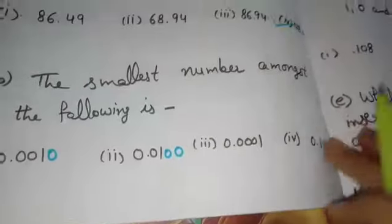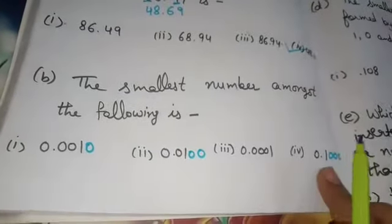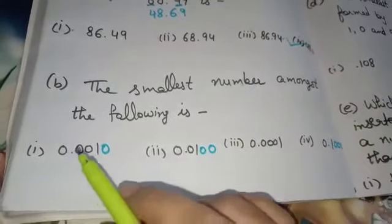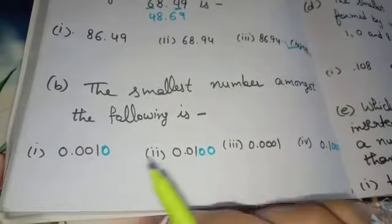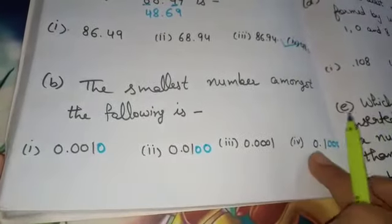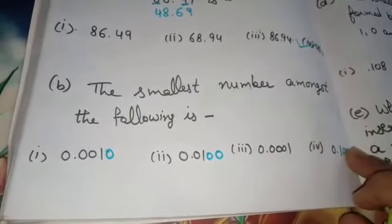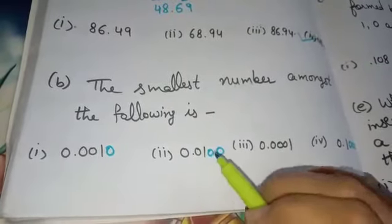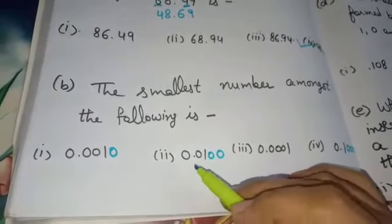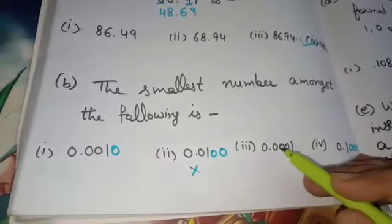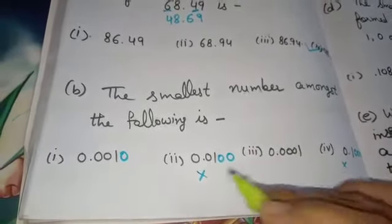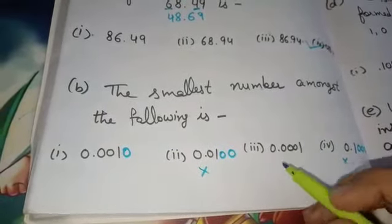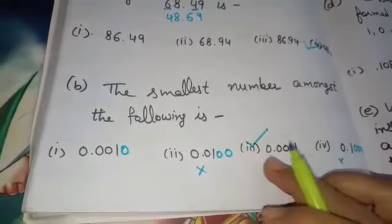Part B: we have to find the smallest number among the following. To compare, first make them like decimals by adding a zero. Compare the whole number part — same. Then the tenths place — the greatest one is eliminated since we need the smallest. Then check the hundredths place: here it is 0, here it is 1, so eliminate 1. Then the thousandths place: here it is 1, here it is 0. So the smallest number is the third option: 0.0001.